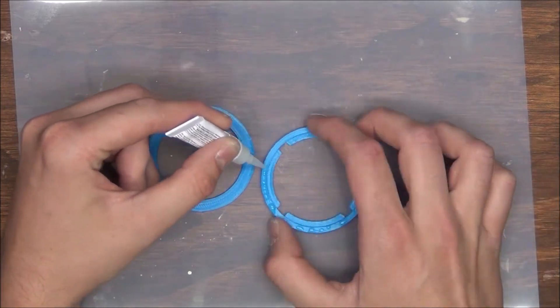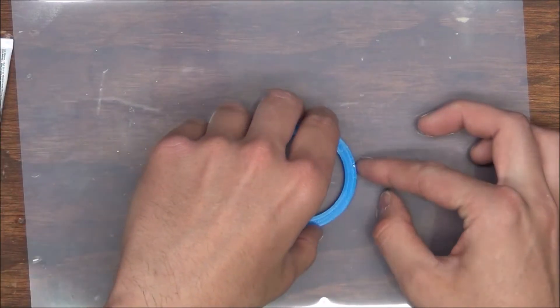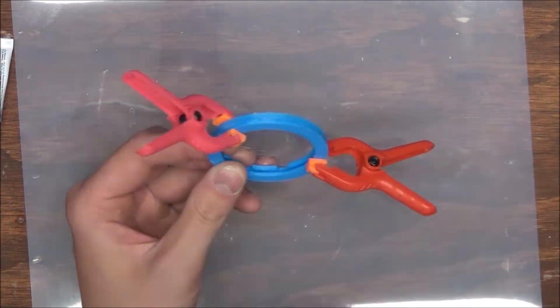First, I'm going to take these two circle pieces and super glue and clamp them together. Like that. Now we can just kind of throw this piece aside until later.